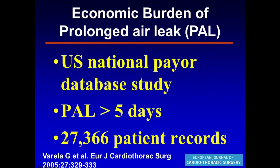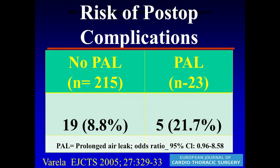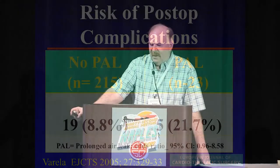This is a paper from 2005 looking at a national database examining prolonged air leaks. Their definition for prolonged air leaks was that it lasted more than five days. With 27,000 patients in the database, when you look at the risk of complications it correlates with the presence of a prolonged air leak. Patients with no air leaks had a total complication risk of only 8.8%, but once patients had an air leak the risk of complications increased almost threefold.